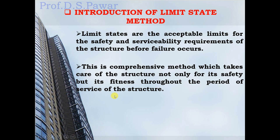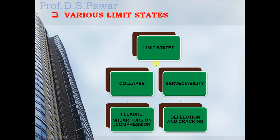There are various limit states. The first is the limit state of collapse, and the second is the limit state of serviceability. In the limit state of collapse, we design the section for flexure — that is bending, shear, torsion, and compression. In the limit state of serviceability, we design the section for deflection and cracking.